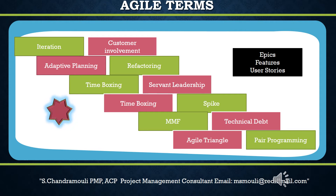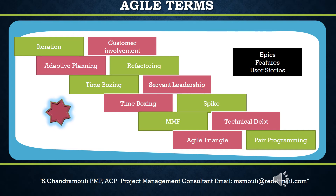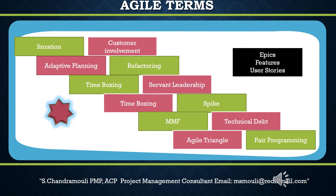Eighth, servant leader: servant leadership represents a model of leadership in agile projects in which the leader assumes a service-oriented role, serving the team. A servant leader finds the needs of the team and helps the team solve problems. A servant leader will not give instructions or commands to the team, but rather helps by servicing and empowering the team. Ninth, spike: a spike can be defined as a small learning period or technical investigation for solving a problem.